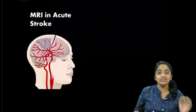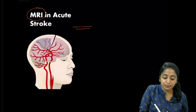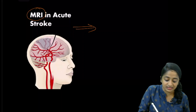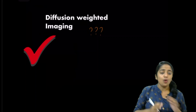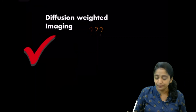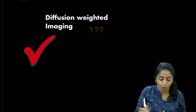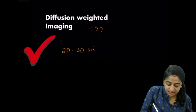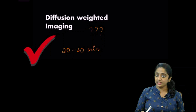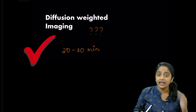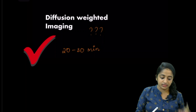The investigation of choice in acute ischemic stroke is MRI, and more specifically the sequence of choice is diffusion-weighted imaging. Why diffusion-weighted imaging and not conventional sequences like T1 or T2-weighted? The answer is simple: diffusion-weighted imaging will detect changes in ischemic stroke as early as 20 to 30 minutes. Conventional sequences take much longer — more than 6 hours — to detect any changes. So the stroke imaging sequence of choice is diffusion-weighted MRI.